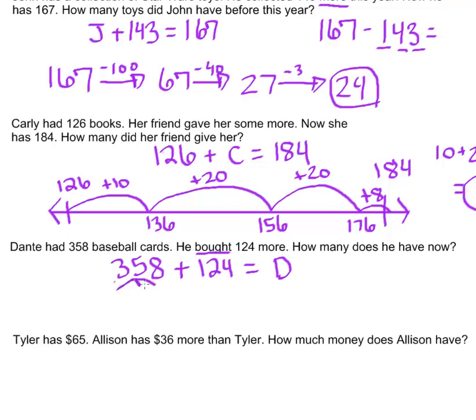I am going to use a separating by place value in order to add these pieces together. So first I am going to decompose my 358 into a 300, a 50, and an 8. 124 into a 100, a 20, and a 4.